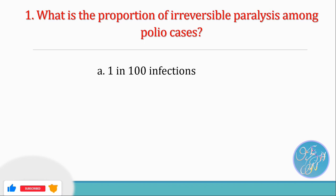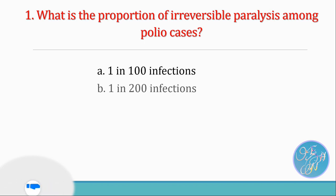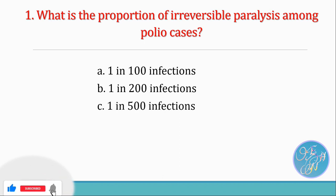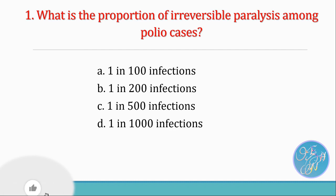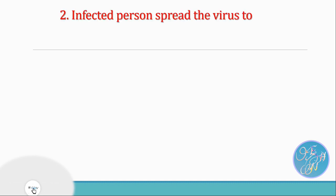Question 2: An infected person spreads the virus to others — Option 1: before and up to 4 weeks after symptoms appear. Option 2: before and up to 6 weeks after symptoms appear. Option 3: before and up to 2 weeks after symptoms appear. Option 4: none of the above. Please write your answer in your study sheet.